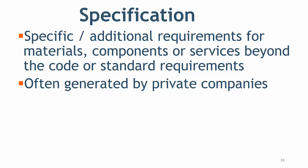The last one is specification. Specifications provide specific additional requirements for the material, components, or services that are beyond the code or standard requirements. For example, if you want A106 Grade B pipe with a maximum carbon of 0.23% against the standard requirement of 0.3% max carbon, you have to specify your requirement in your specification or in a purchase order when you place the order to the manufacturer.